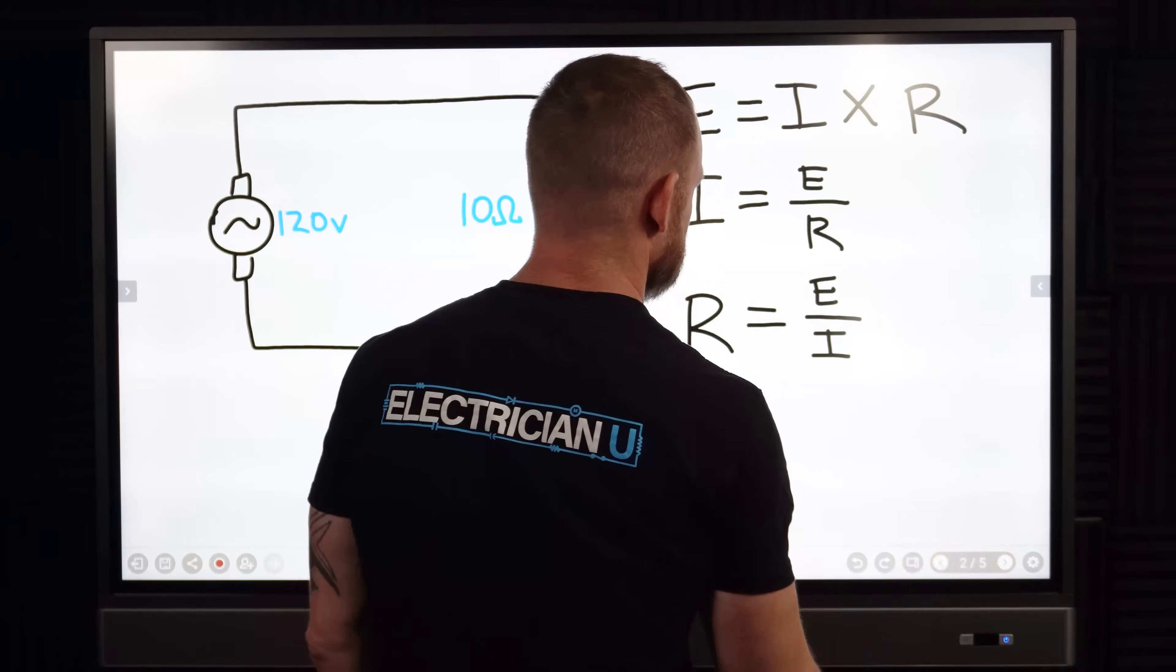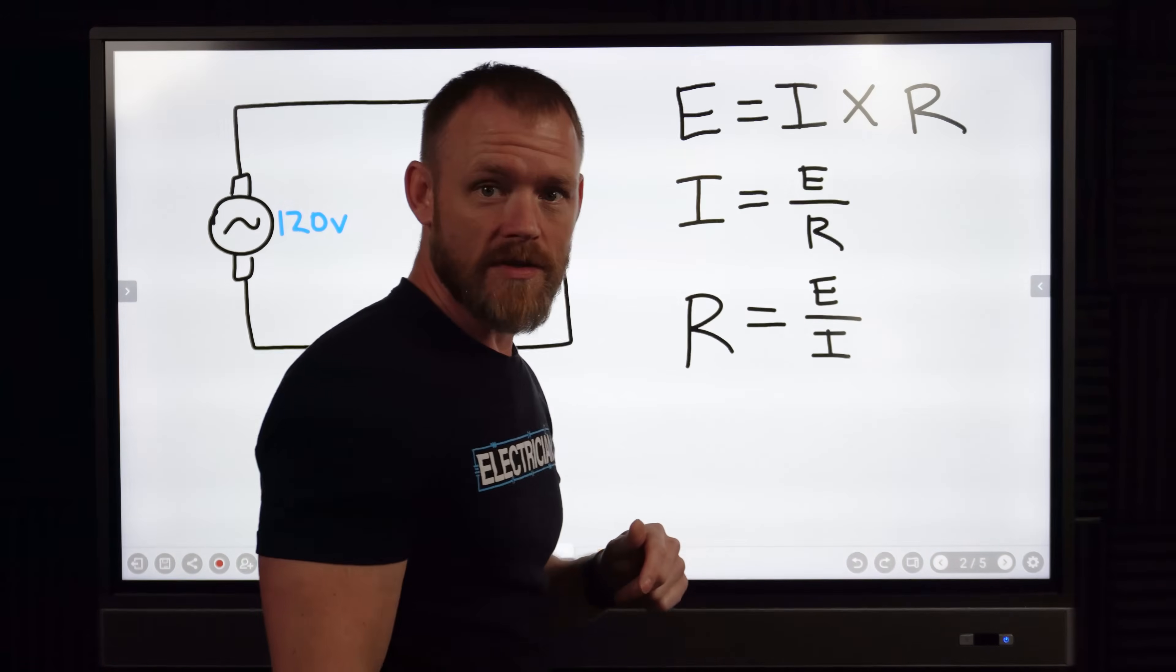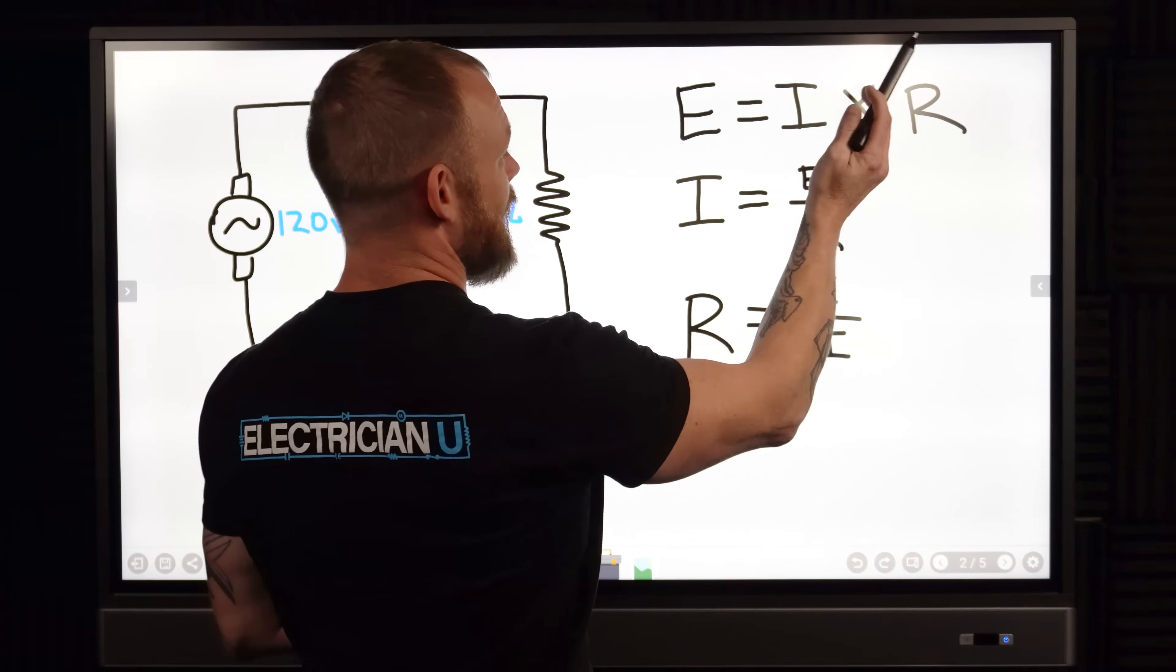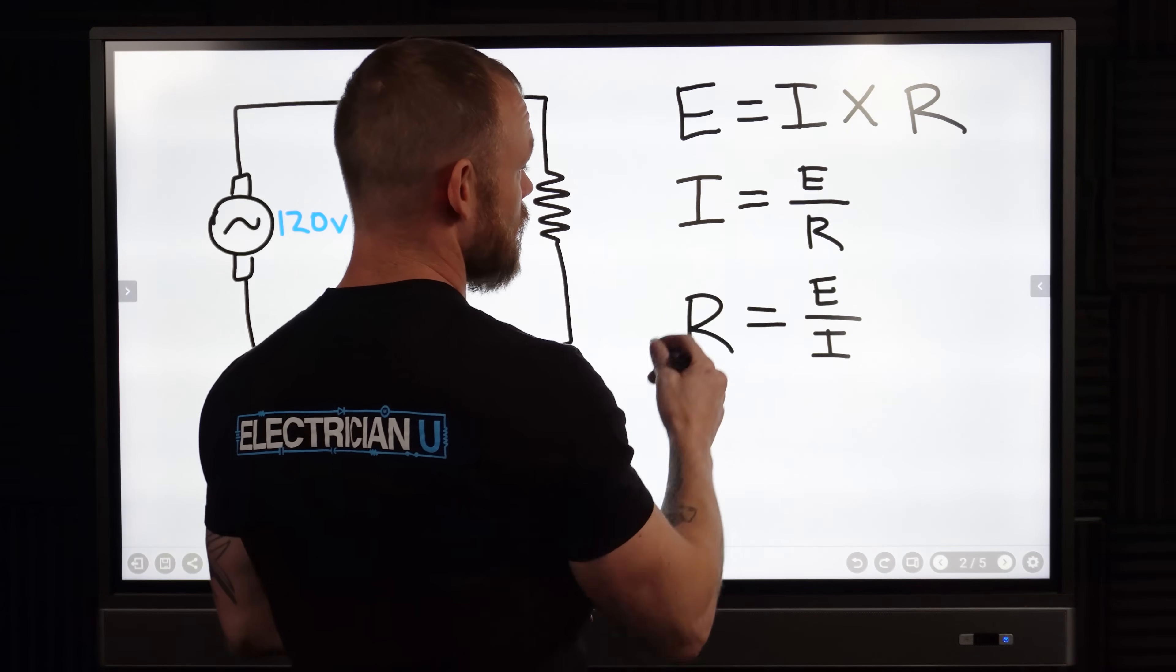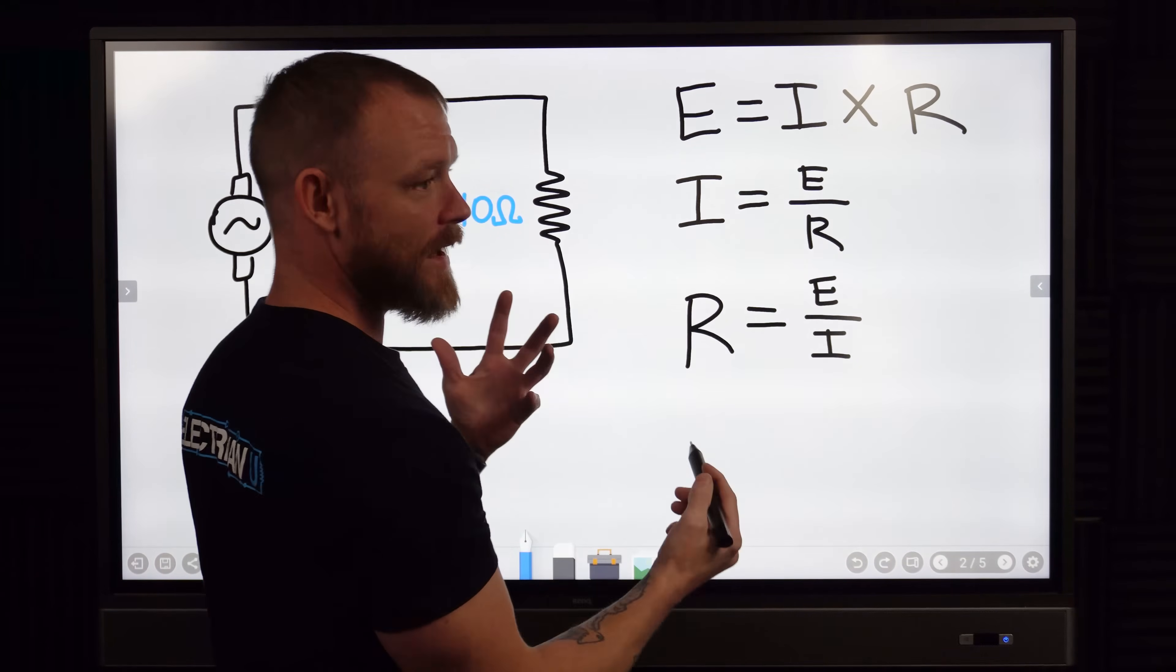Another way to look at that is just this. I've rearranged all three of the equations, it's the same things I was just showing you. So E equals I times R, but I also equals E over R, and R equals E over I.